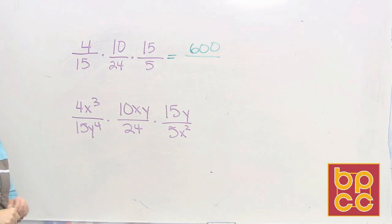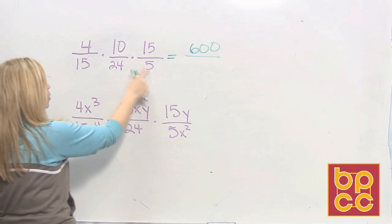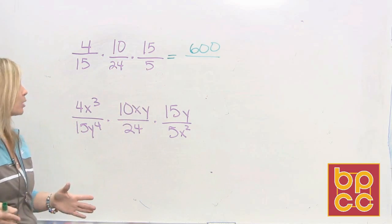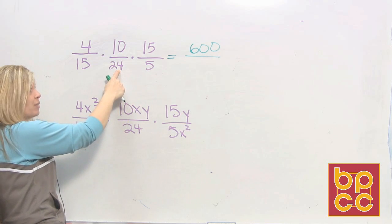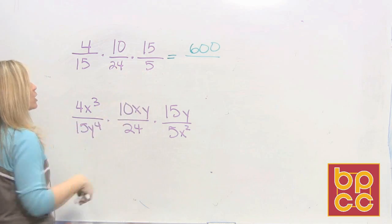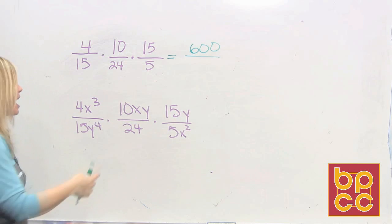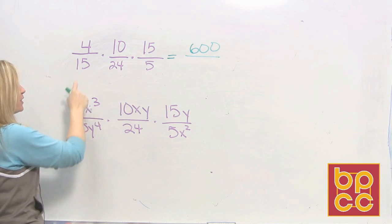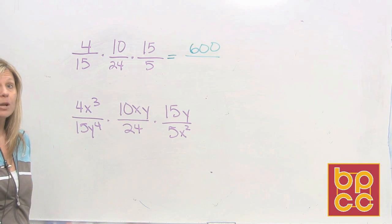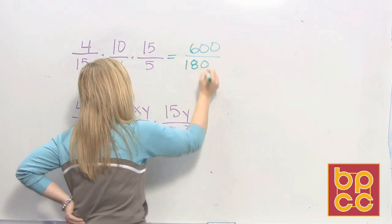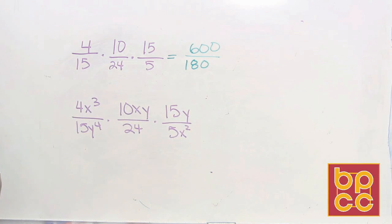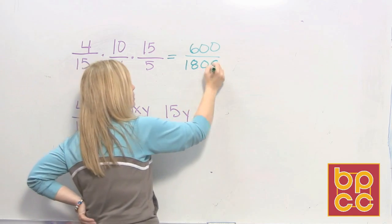Now we're going to multiply the denominator. I'm going to do 5 times 24 first because I can do that. 5 times 24 is 120. Then I have to do 120 times 15. Well I happen to know 12 times 15 is 180, so 120 times 15 would be 1800.